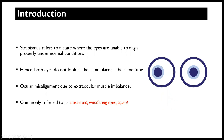Normally both eyes will end up not looking at the same place at the same time, but ideally in a normal person you will have both eyes looking at the same object at the same time, and when you move it moves with you. With strabismus, the eyes are unable to align properly under normal conditions, and as a result you end up having ocular misalignment due to extraocular muscle imbalance — that is normally the main reason.